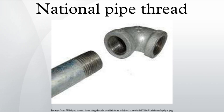NPT is defined by ANSI/ASME standard B1.20.1. Pipe threads are different from machine screw and bolt threads, which are designated NC and NF. The biggest difference is the taper on pipe threads. The taper rate for all NPT threads is 1 in 16, measured by the change of diameter over distance. The angle between the taper and the center axis of the pipe is arctan(1/32), which equals approximately 1.7899 degrees.